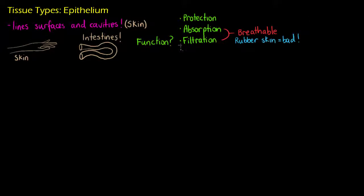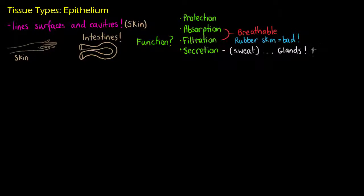The last important function of epithelium is secretion. You could think of sweat as a secretion from your epithelial cells. You might say sweat comes from sweat glands — and you're not wrong, but neither am I. Our glands are made of epithelial tissue, and what do our glands secrete? Hormones.